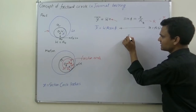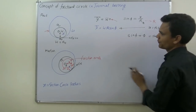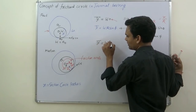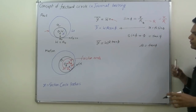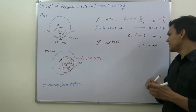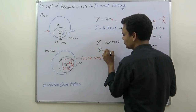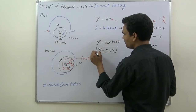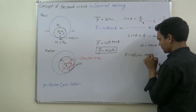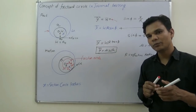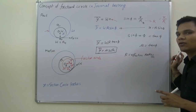Since the angle φ is very small, sin φ ≈ tan φ. So we can write T_f = W · R · tan φ. From the definition of friction, μ = tan φ, where μ is the friction coefficient. Therefore, the frictional torque formula is T_f = μ · W · R, where R is the effective radius. Note that the effective radius differs between uniform pressure theory and uniform wear theory.